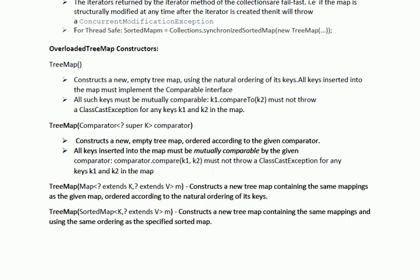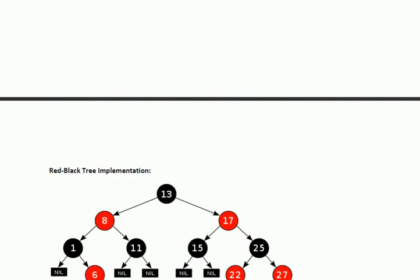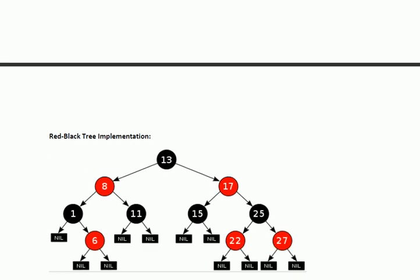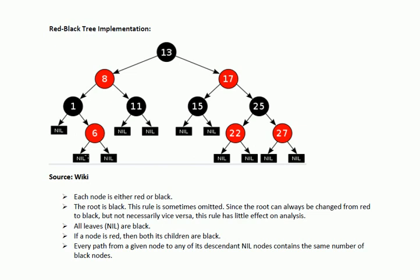TreeMap internally uses the red-black tree algorithm. The red-black tree algorithm has a few key properties: first, each node is either red or black; the root is black and all leaves (nil nodes) are black. If a node is red, then both its children are black. And every path from a given node to any of its descendant nil nodes contains the same number of black nodes.